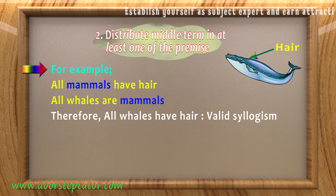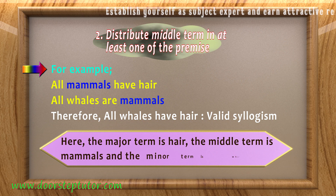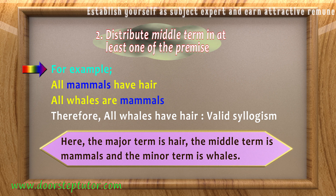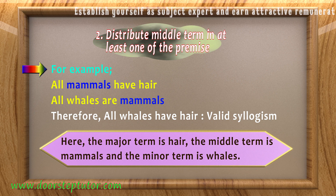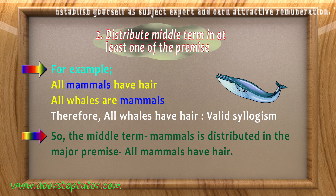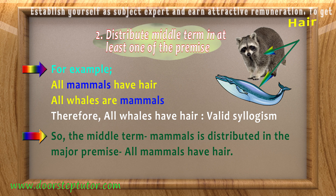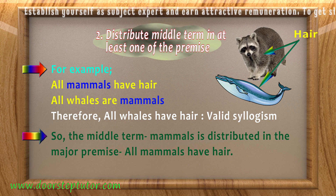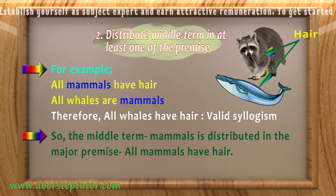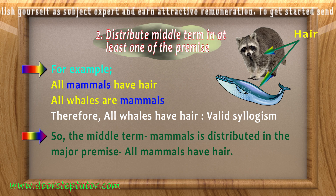This syllogism is valid because the major term is 'hair', the middle term is 'mammals', and the minor term is 'whales'. The middle term 'mammals' is distributed in the major premise 'all mammals have hair', because in an A proposition (all S is P), the subject term is always distributed.